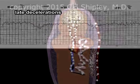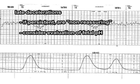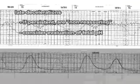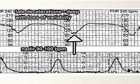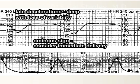Persistent late decelerations are always considered to be non-reassuring, and should trigger evaluation of fetal pH to look for acidosis. Here is an example of deep late decelerations with loss of variability. Note how smooth the tracing line is compared to normal. The nadir of each deceleration reaches 90 to 100 beats per minute, well below the normal level. Loss of variability in the presence of persistent late decelerations is an ominous sign, and should prompt serious consideration for immediate delivery.